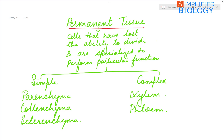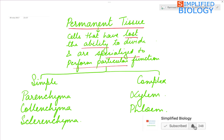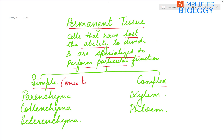Permanent Tissues are made up of cells that have lost the ability to divide and they get specialized to perform particular functions. They can be divided into two types: Simple Tissues and Complex Tissues. Simple Tissues are made up of one kind of cells, while Complex Tissues are made up of many types of cells.